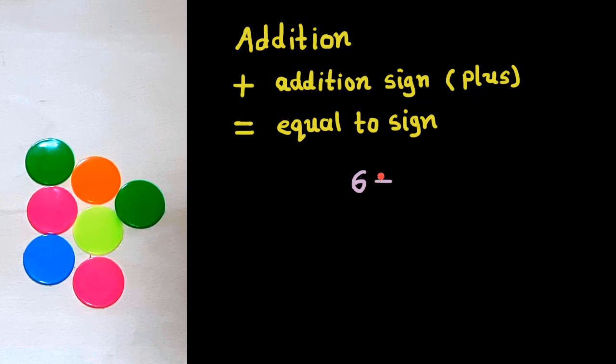6 plus 1 is equal to 7. So, we learned two new signs in this video: plus and equal to.